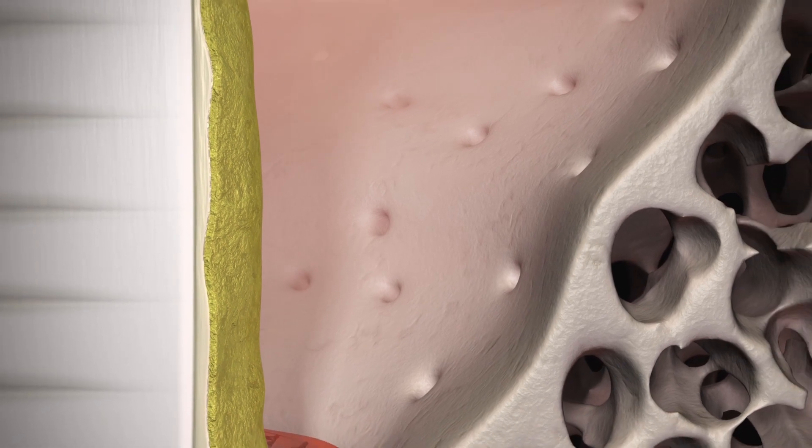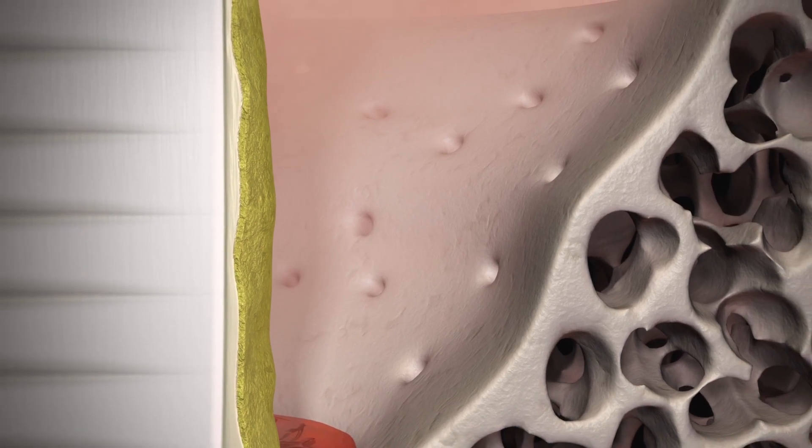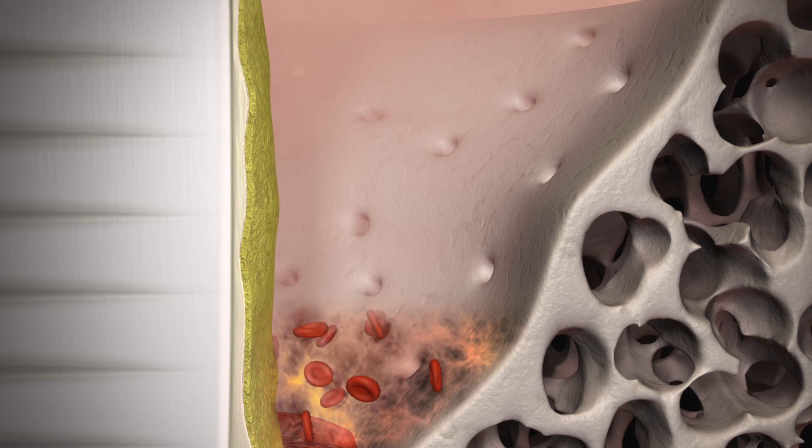Once the flap is closed, the periodontal defect fills with a blood coagulum of fibrin and erythrocytes.